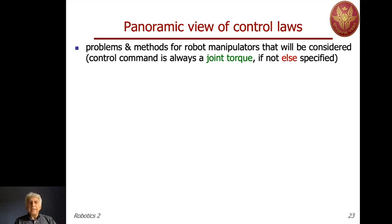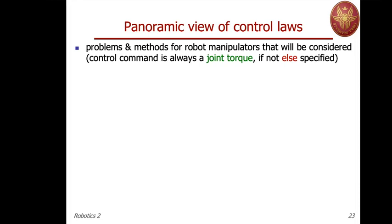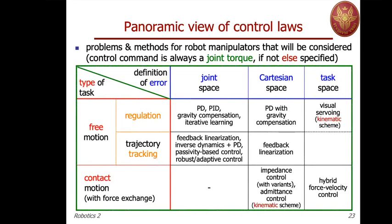Let me come to a conclusion of this lecture by giving a panoramic view of all the control laws we will look at. In all these methods, we assume the control command is a joint torque, or equivalently a desired current sent to the motors in the case of electrical motors. In the following lectures we will address a number of problems and give solutions. In this table, the rows represent the type of tasks and the columns represent the space in which we define the error, helping us classify the various situations.